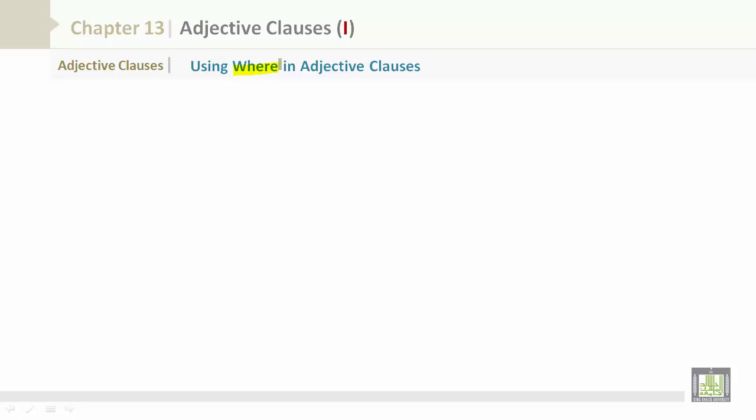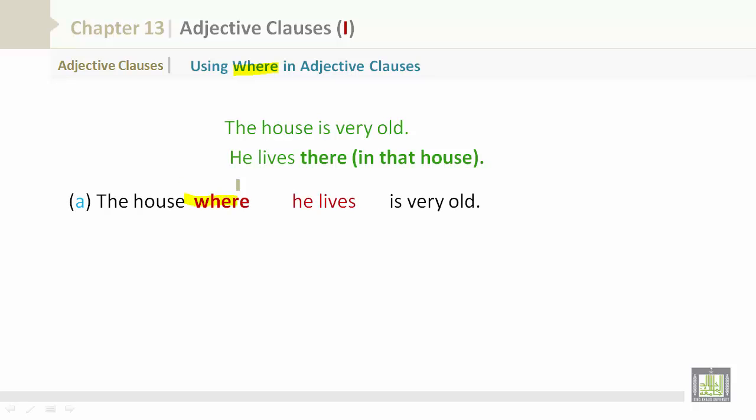Using where in adjective clauses. The house is very old. He lives there, in that house. Let's combine them. The house where he lives is very old. The house in which he lives is very old. The house which he lives in is very old.